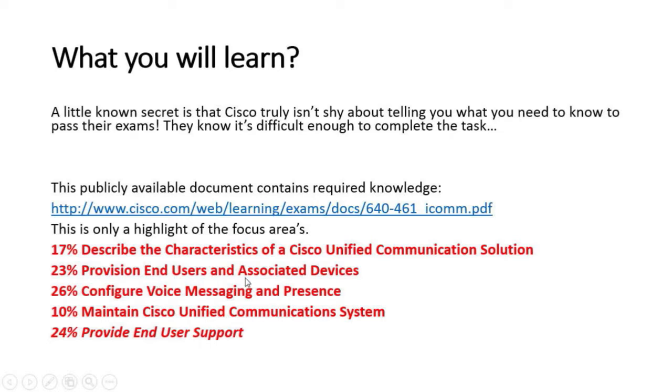You can see 70% is describing the characteristics of a Cisco Unified Communication solution, 23% is about provisioning end users and associated devices, 26% is about configuring voice messaging and presence, 10% is maintaining the Cisco Unified Communication system, and 24% is providing end user support. The big focus of this class is the day-to-day operations of a Cisco Unified Communication solution. All of these topics are important — you can't just focus on some of them and expect to pass the exam.